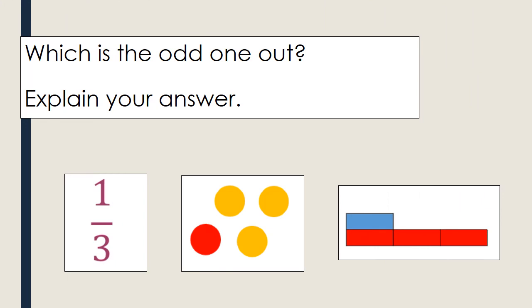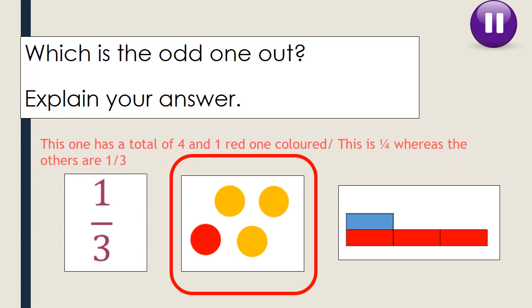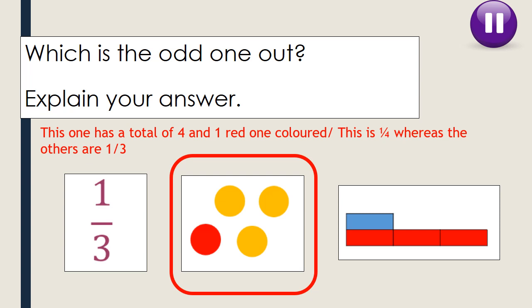Have a look at the three pictures on screen. Which one is the odd one out? The one in the centre is the odd one out — it shows four in total with one red, meaning one quarter is red. The first fraction shows one third, and the bar model on the right also shows one third — one out of three. The centre picture shows one out of four, so it's the odd one out.